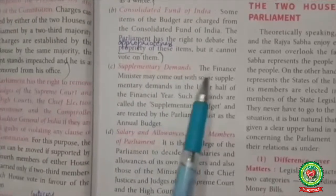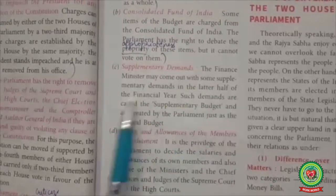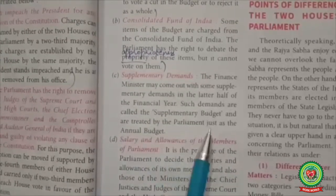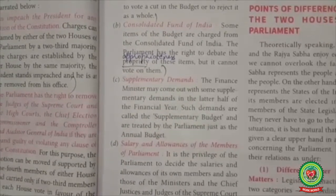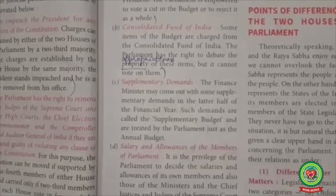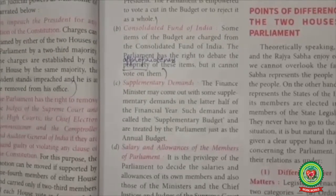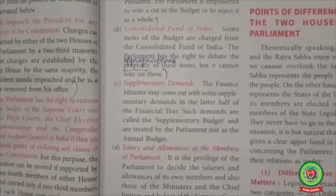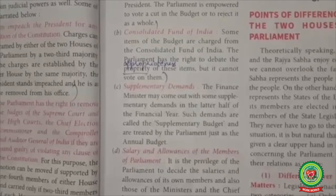Supplementary Demands: The Finance Minister may come out with supplementary demands in the later half of the financial year. Such demands are called the supplementary budget and are treated by Parliament just as the annual budget. A supplementary demand is an additional grant to meet government expenditure outside the annual budget. After presenting the Union Budget, the Finance Minister seeks approval from Parliament through supplementary demands for grants for additional expenditure above the budget estimate. Money for additional expenditure is sourced either from the savings of various ministries, departments, or revenue generations.